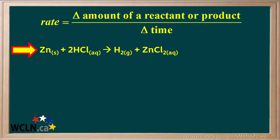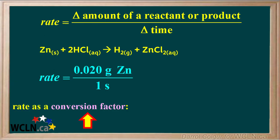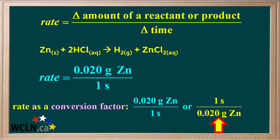For example, in this reaction, zinc metal reacts with hydrochloric acid to produce hydrogen gas and aqueous zinc chloride. If it is experimentally found that 0.02 grams of zinc reacts in one second, the rate can be expressed as 0.02 grams of zinc per one second. This conversion factor can be expressed as 0.020 grams of zinc over one second, or it can be flipped to give us one second over 0.020 grams of zinc.